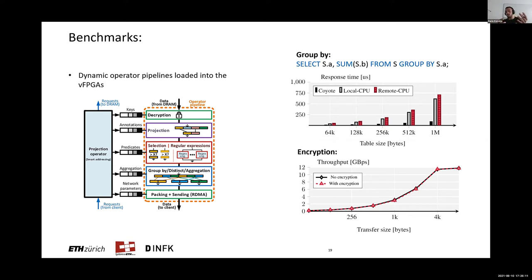To show where this performance mostly stems from: in the encryption example, we're reading data from a remote node — in one case reading blank raw data, in the other performing encryption before transferring. Because encryption can be nicely pipelined — this is a highly parallelized version of AES — you can see that the performance overhead is pretty much negligible.